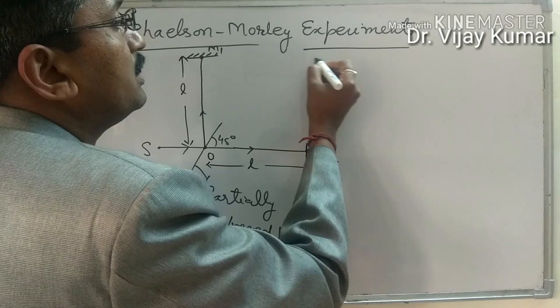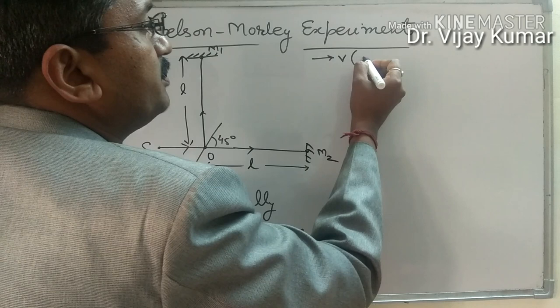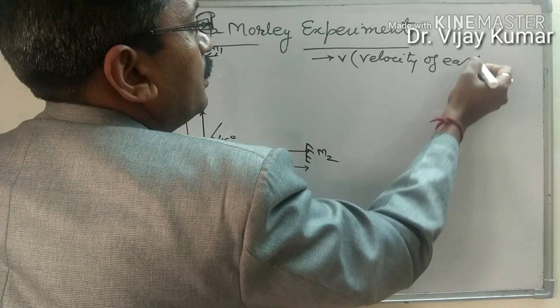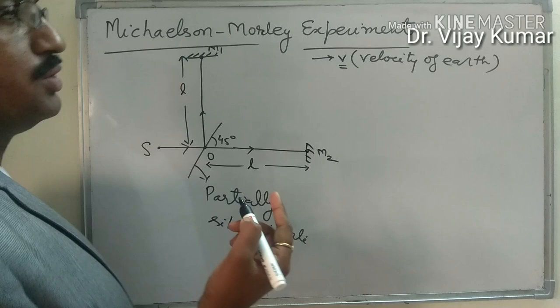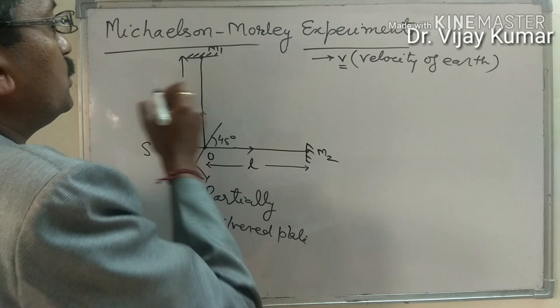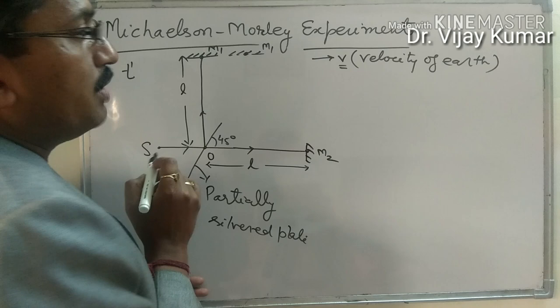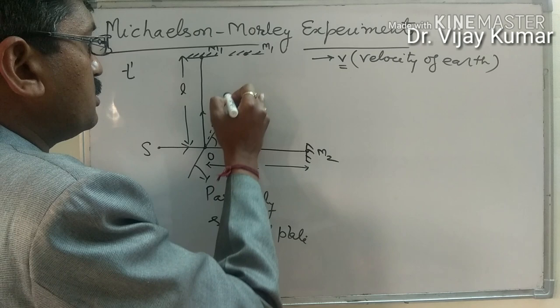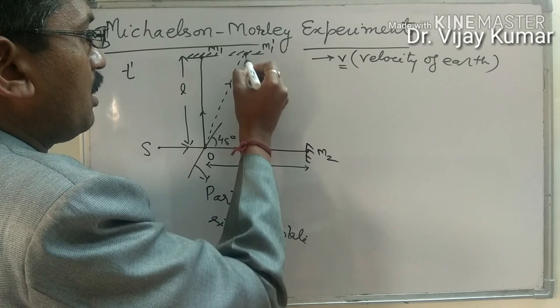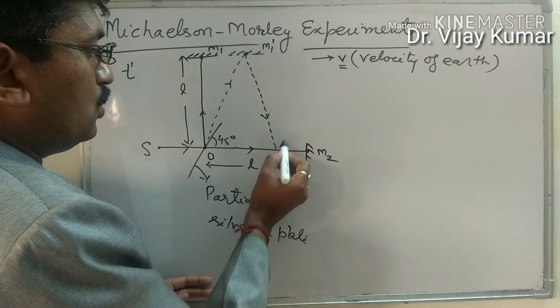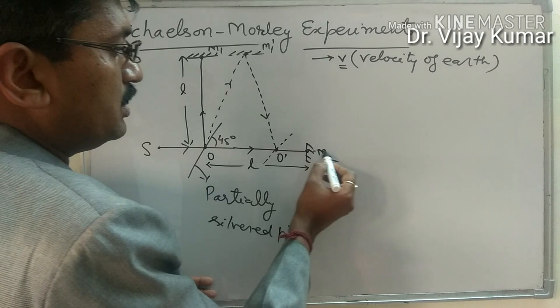This experiment is moving with velocity V, which represents the velocity of Earth. Earth is moving with velocity V, and with respect to the universe this experiment is also moving with velocity V. After time T', the mirror shifts to position M1', the light ray is incident at M1', the origin O shifts to O', and mirror M2 shifts to M2'.